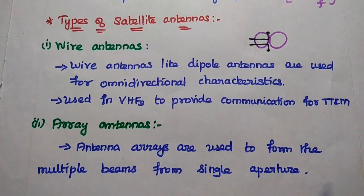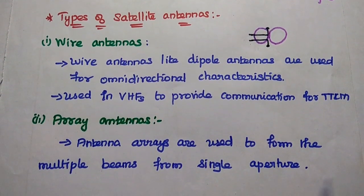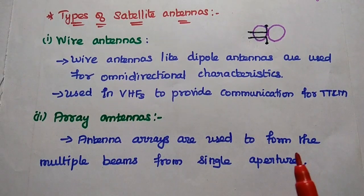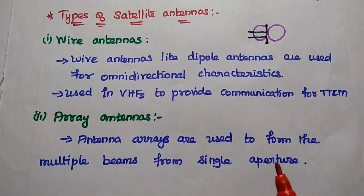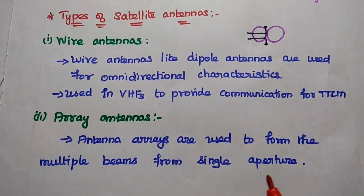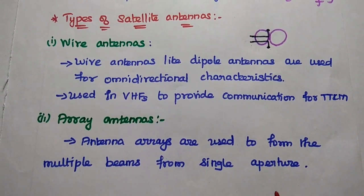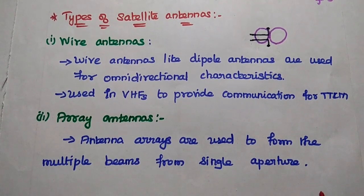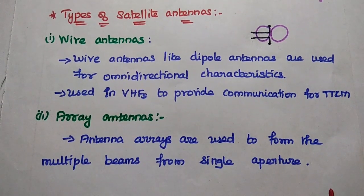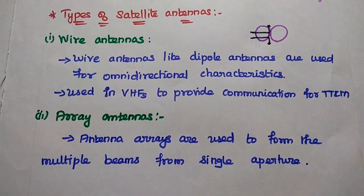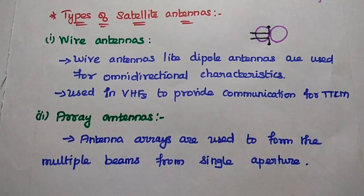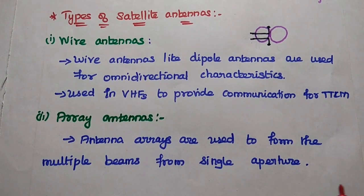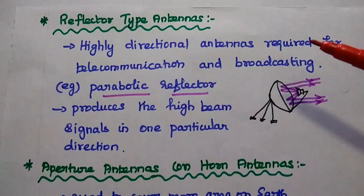The next type is array antennas. This concept is very important. Array antennas are mainly used to form multiple beams from a single aperture. Multiple array antennas are used to increase the signal strength.